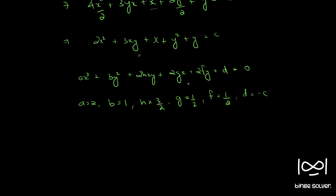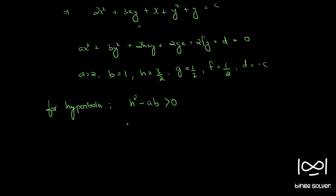For the general second-degree equation to represent a hyperbola, the condition is h squared minus ab should be greater than 0. If h squared minus ab is less than 0, it is a circle or ellipse; when h squared equals ab, it is a parabola. Checking: h squared is 9 by 4, and ab is 2, so 9 by 4 minus 2 equals 1 by 4, which is greater than 0.